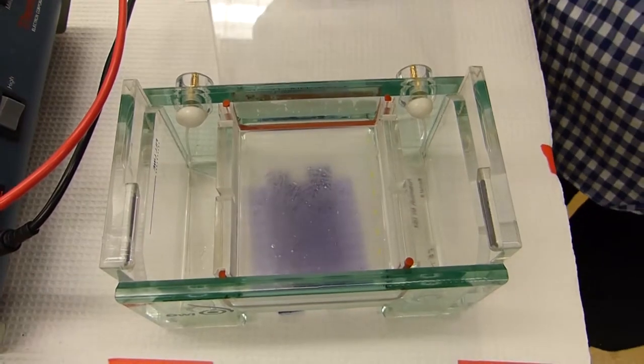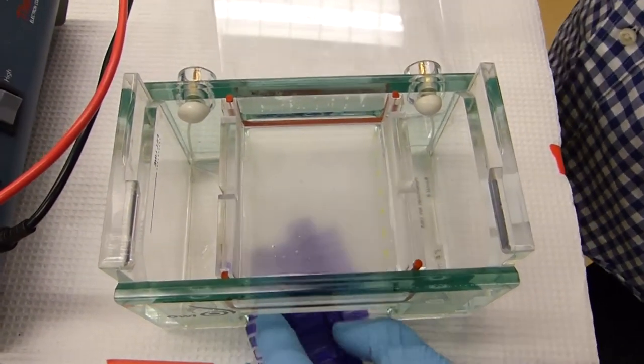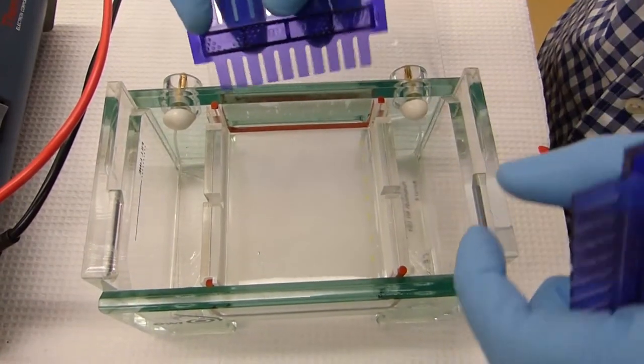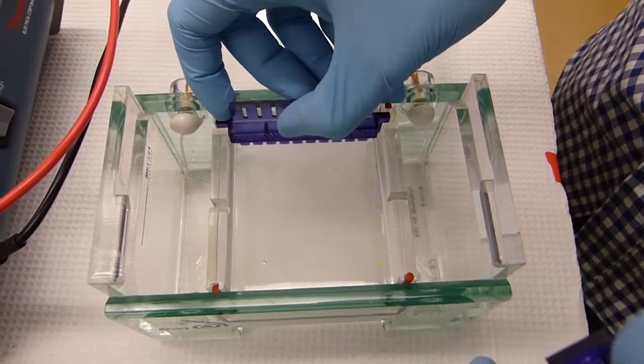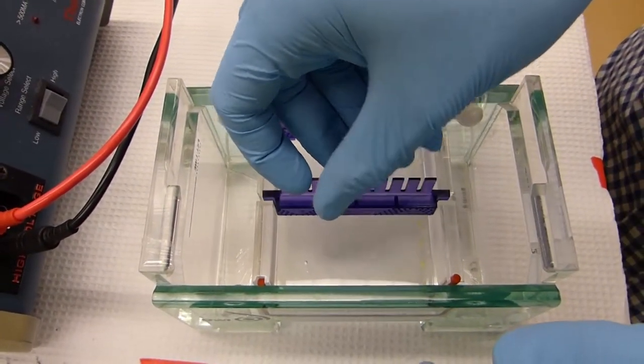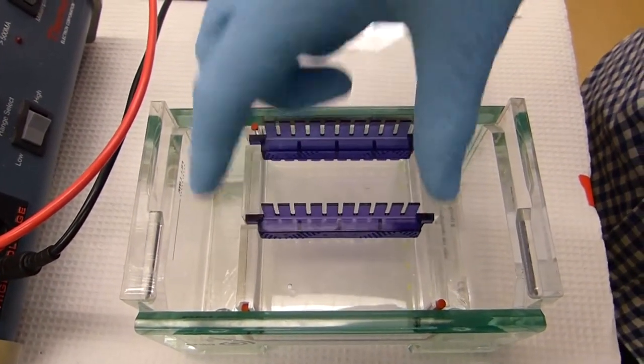Once you've added about 50 milliliters, you can add the two gel combs to add the slots for your gel. Depending on what you're doing, you may be using one or two gel combs. In this case we are doing two gel combs or a double decker.